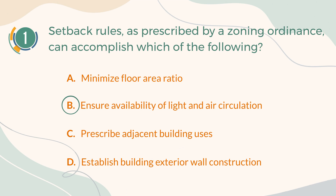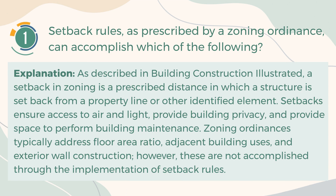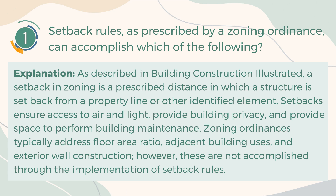The correct answer is B. Ensure Availability of Light and Air Circulation. Explanation: As described in Building Construction Illustrated, a setback in zoning is a prescribed distance in which a structure is set back from a property line or other identified element. Setbacks ensure access to air and light, provide building privacy, and provide space to perform building maintenance. Zoning ordinances typically address floor area ratio, adjacent building uses, and exterior wall construction. However, these are not accomplished through the implementation of setback rules.